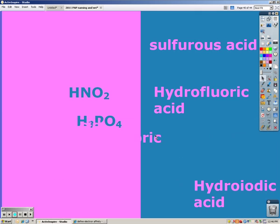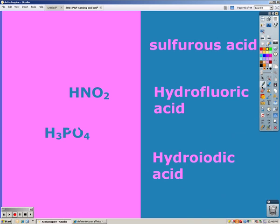And finally the last one is HI. I is iodide, so we have hydroiodic acid.